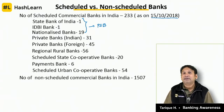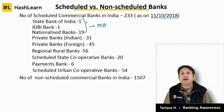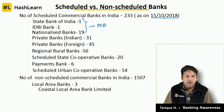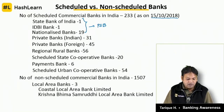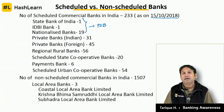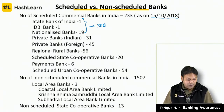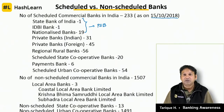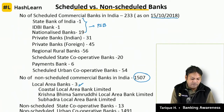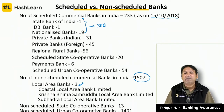The number of non-scheduled banks is very high, standing at 1507. Most of these are cooperative banks. Non-scheduled commercial banks are only 3 local area banks: the Coastal Local Area Bank, Krishna Bhima Samruddhi Local Area Bank, and the Subhadra Local Area Bank — earlier there were 4 but now only 3. Non-scheduled cooperative banks number 13 and non-scheduled urban cooperative banks number 1491, totaling 1507.